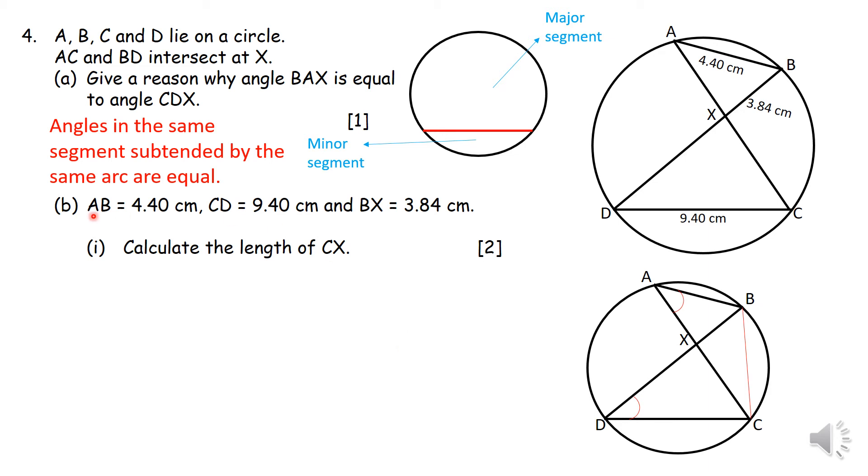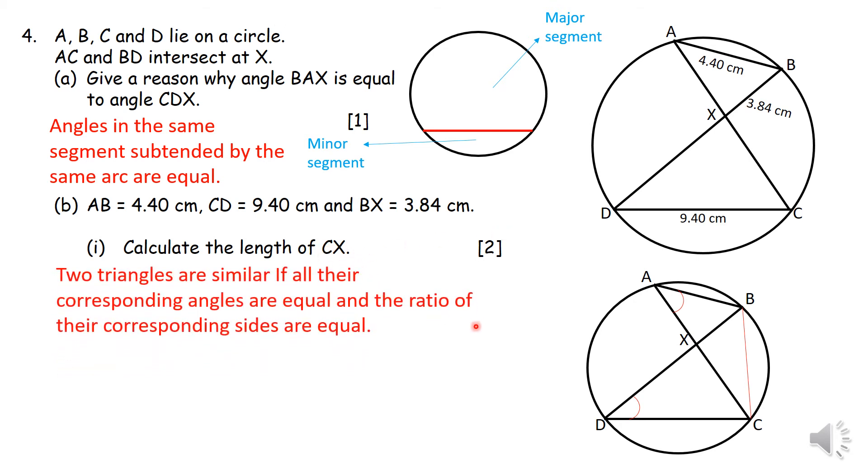Right, so part B, you're told that AB is 4.4 centimeters, as you can see from the diagram. CD is 9.4 centimeters. BX is 3.84 centimeters. You're supposed to calculate the value of CX. Now, I'm going to use a different method. So when triangles are similar, and I talked about this angle B would be equal to angle C, and if you can prove that two angles of a triangle are equal, then the third angles will be equal, and the two shapes will be similar.